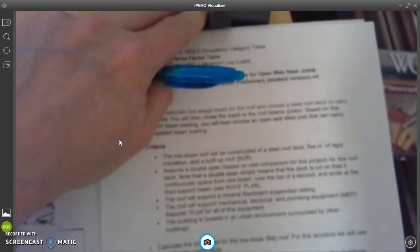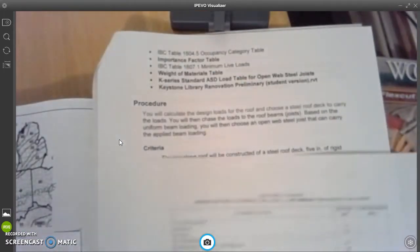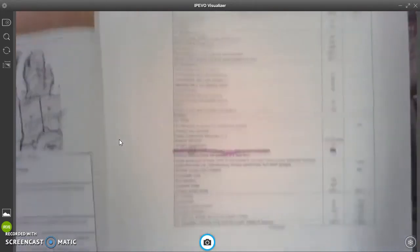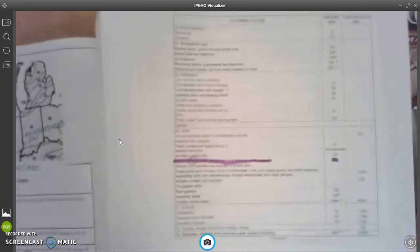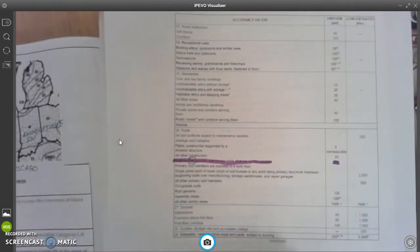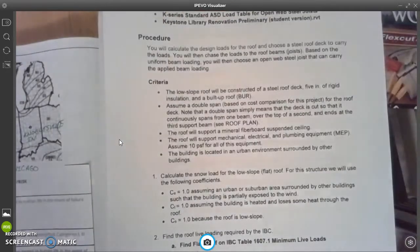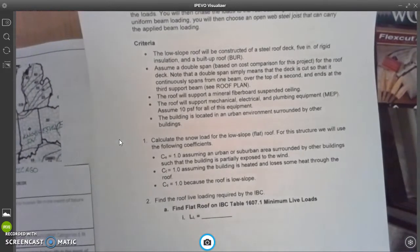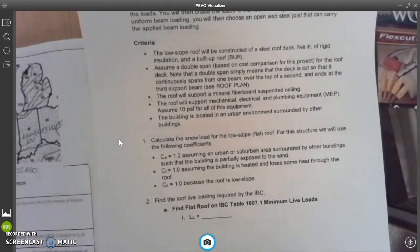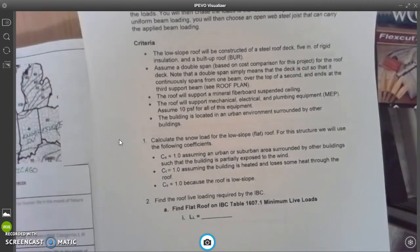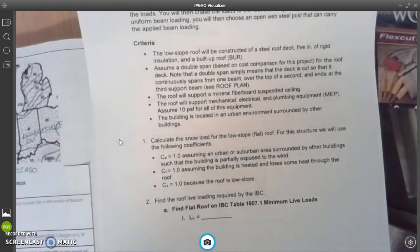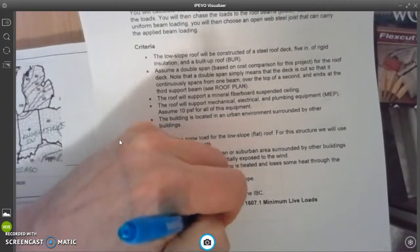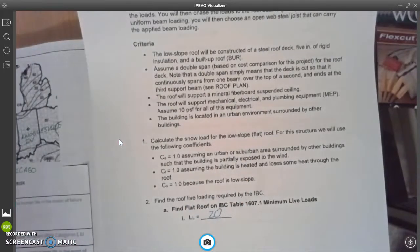So I'm going to bring this back up on my answer key. What I'm going to do for number 2 is, it says find the flat roof on the IBC 1607.1 minimum live snow loads, and I'm going to put in the value of 20 right there. So that gets a 20.